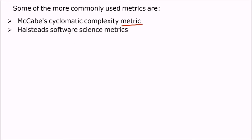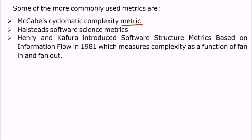the Halstead software science metric, and Henry and Kafura introduced a software structure metric based on information flow in 1981, which measures complexity as a function of fan-in and fan-out.